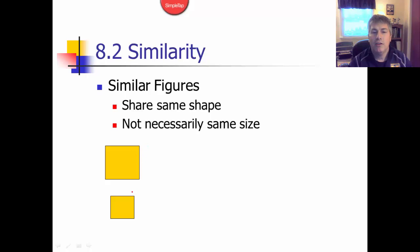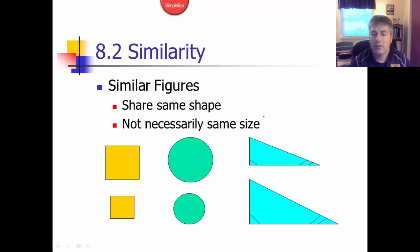These two squares are similar. In fact, all squares are similar, just like circles. These two triangles, based on the tick marks, are also similar, and we'll explore that a little later.